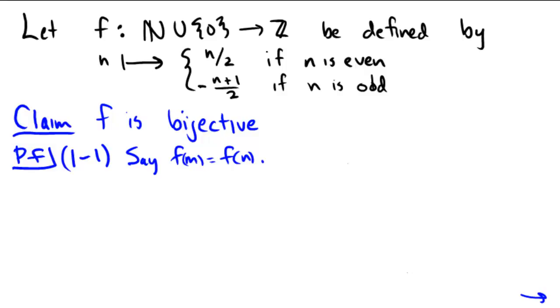Now there are a couple cases to consider. If you look closely at the definition, you'll notice that the top branch gives me positive outputs because n came from natural numbers or 0, so non-negative would be more technical. But the bottom branch is always giving me negative results, so f(m) and f(n) are either going to be positive or negative.